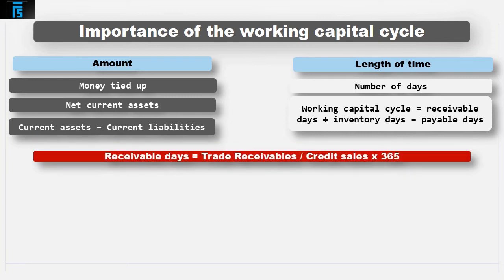Receivable days will equal trade receivables, divided by credit sales, multiplied by 365, the number of days in a year. Effectively, if receivables are £90 million, and sales are £360 million, this suggests that a quarter of the year's sales are still outstanding, which equates to 3 months, or approximately 91 days, a quarter of 365.